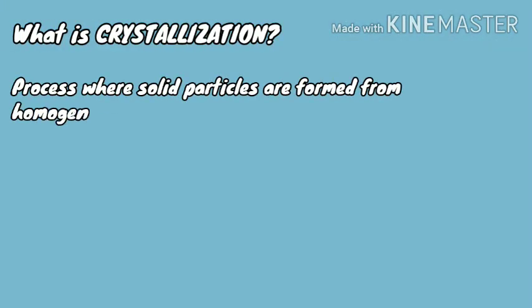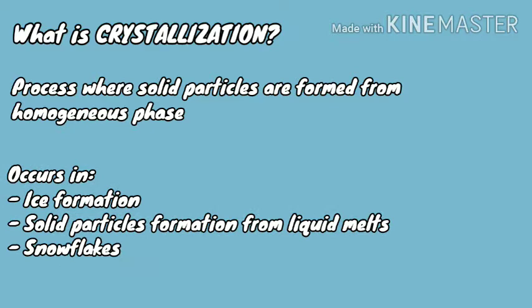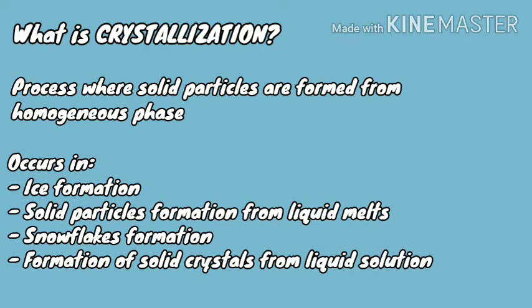Crystallization is a process where solid particles are formed from a homogeneous phase. In our case, the homogeneous phase is the supersaturated sugar solution. It occurs in ice formation, solid particles formation from liquid melts, snowflakes formation, formation of solid crystals from liquid solution which is commercialized, and the example of this experiment. Now let's move on to the experiment.